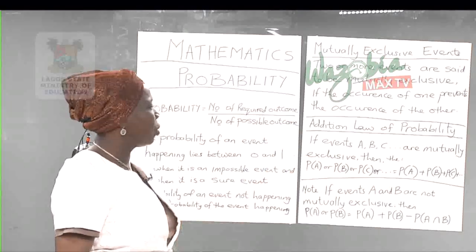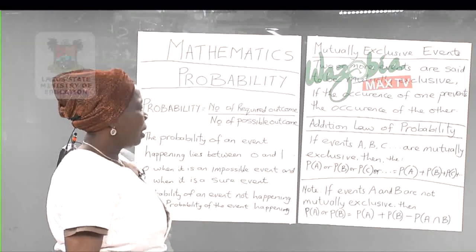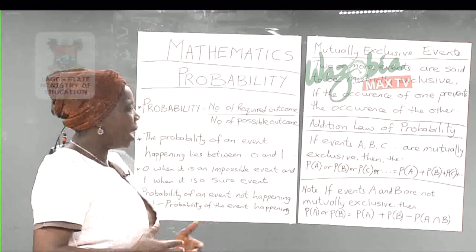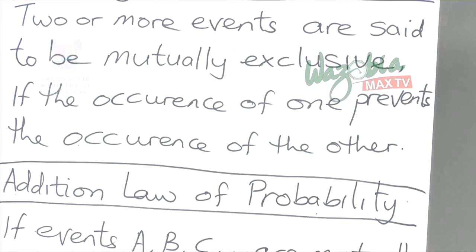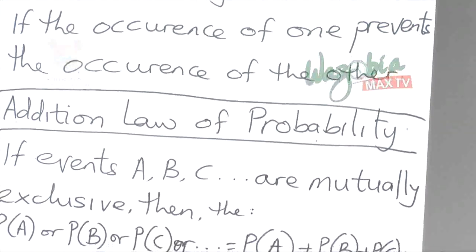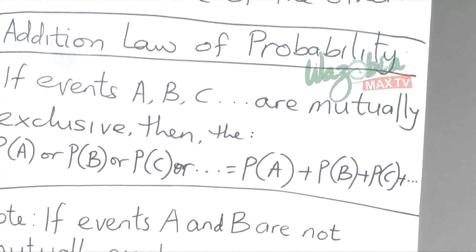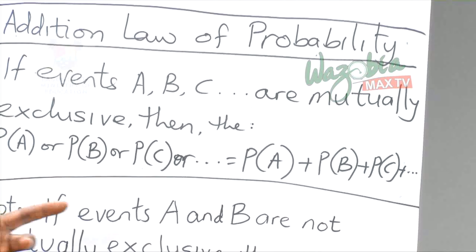A mutually exclusive event leads us to the addition law of probability. The addition law states that if events A, B, C and so on are mutually exclusive — meaning they cannot occur at the same time — then the probability of A or B or C equals the probability of A plus the probability of B plus the probability of C.